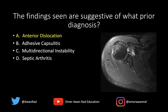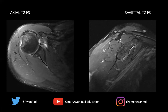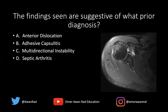Currently the shoulder is not dislocated. But if we come back to this image here, we can see that there's a defect along the posterior lateral humeral head along the axial image. We call that a Hill-Sachs lesion. And along the anterior inferior glenoid, there's a Bankart lesion. This pattern of injury suggests that this patient must have had an anterior glenohumeral joint dislocation.